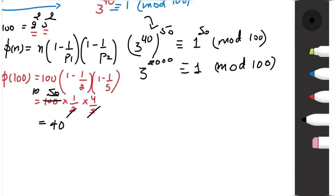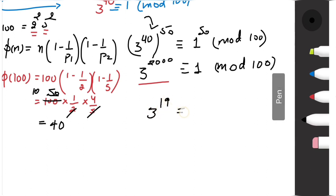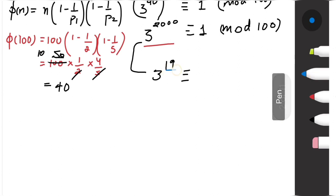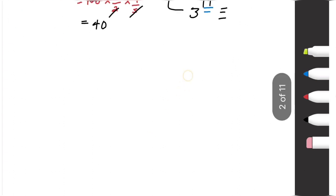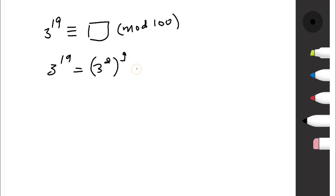Now we need to reach 2019 = 2000 + 19. So if I find 3^19 (mod 100), I can multiply both congruences to get 3^2019. My aim is to find 3^19 ≡ ? (mod 100). I write 3^19 = (3²)^9 × 3 = 9^9 × 3 = (10 − 1)^9 × 3, and apply the binomial theorem.